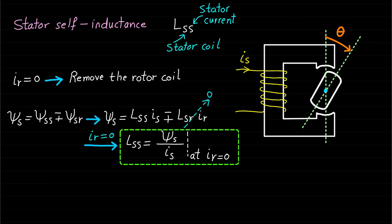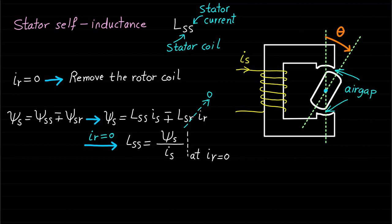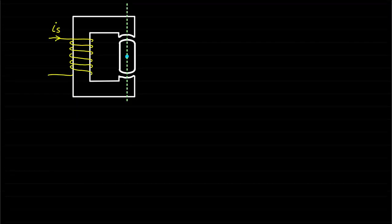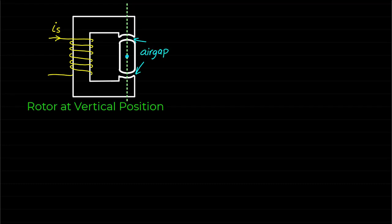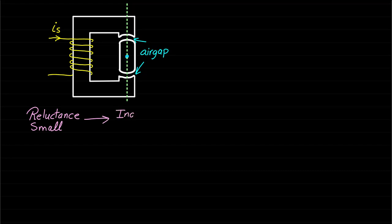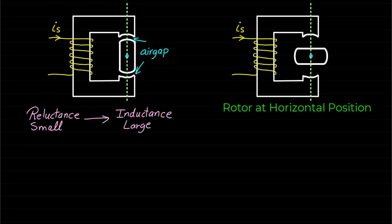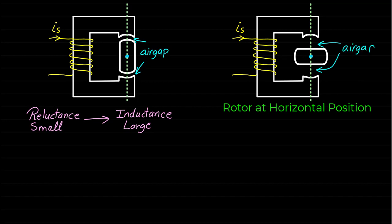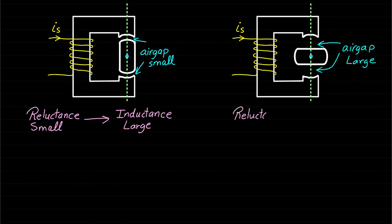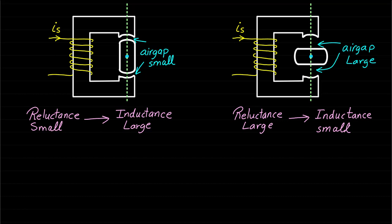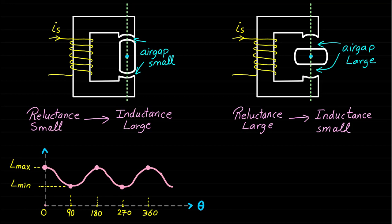The stator self-inductance of this system changes with respect to rotor position because the air gap seen by the stator magnetic field changes with respect to rotor position. When the rotor is at vertical position, the air gap seen by the stator magnetic field is small; therefore, the reluctance is small and the inductance is large. When the rotor is at horizontal position, the air gap seen by the stator magnetic field is large; therefore, the reluctance is large and the inductance is small. Previously, we proved that the stator self-inductance changes two times with respect to rotor position and can be represented as shown.